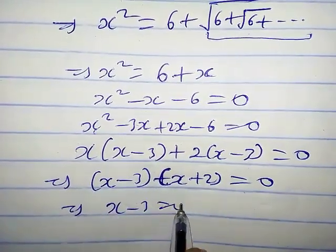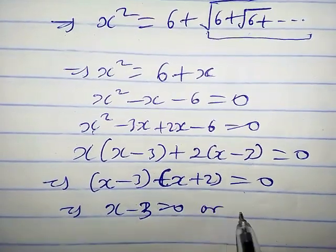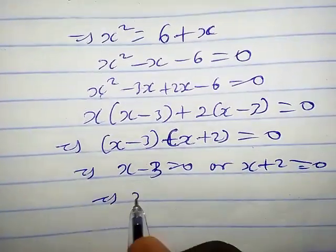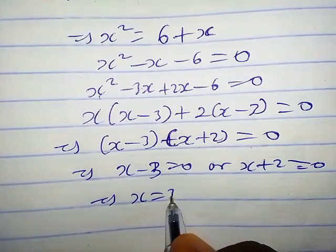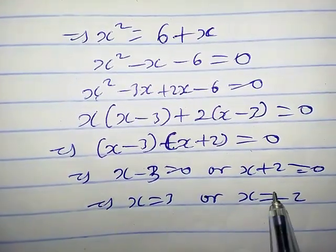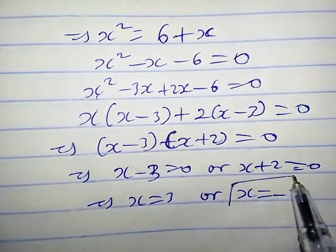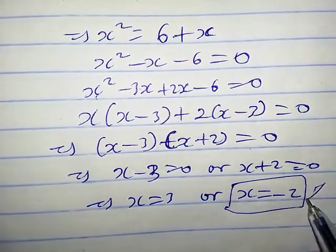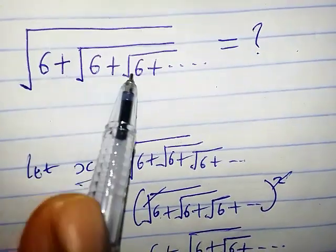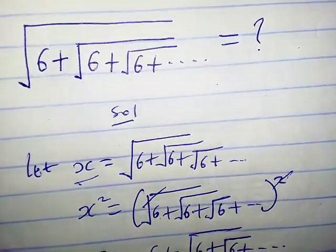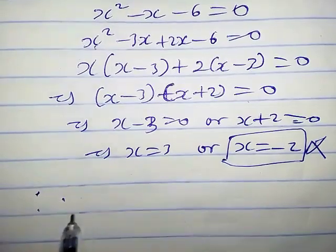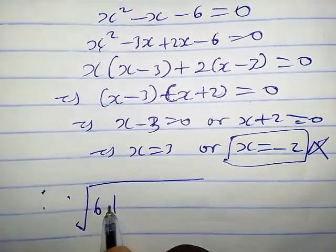This gives us x minus 3 equals 0 or x plus 2 equals 0, so x equals 3 or x equals negative 2. We have two solutions, but we ignore x equals negative 2 because the square root of a positive number always gives a positive value.